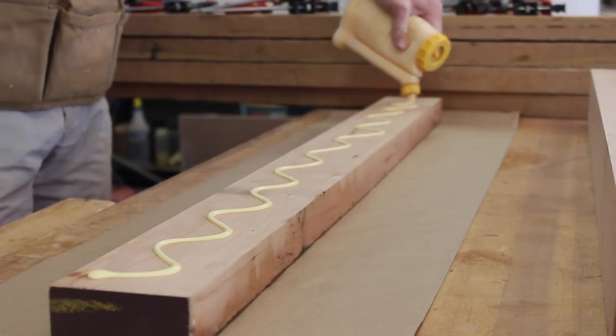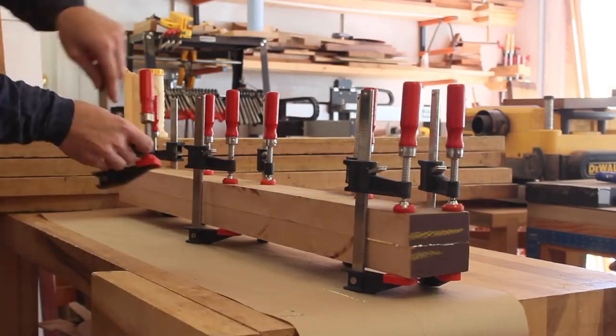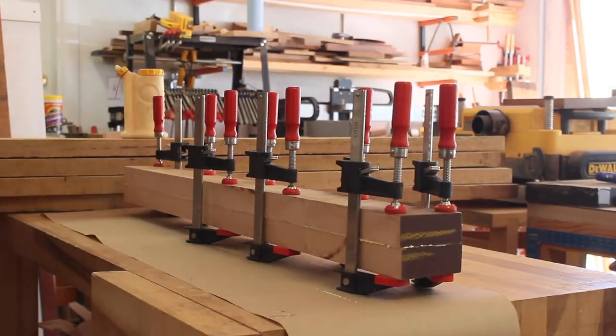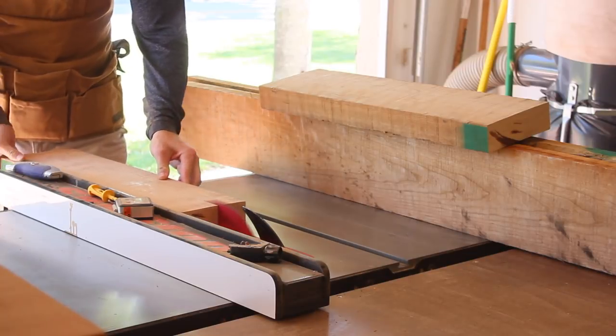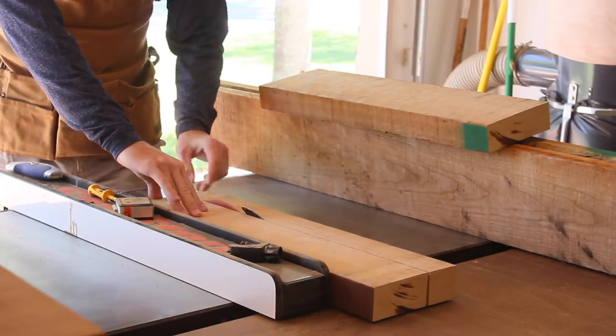The table is going to be made out of 6 quarter and 8 quarter cherry, and here I have some of the 6 quarter material laminated to make the horizontal pieces of the trestles, and then here is some of the 8 quarter material that will make up the vertical pieces.